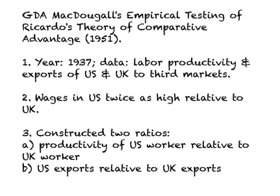In order to test this theory, what he did is the following. He looked at the year 1937 and he looked at two countries, the U.S. and U.K. What he collected is data on labor productivity — that is, output per worker in the U.S. and also output per worker in the U.K.